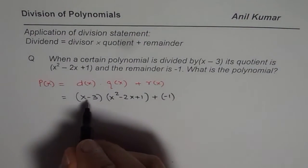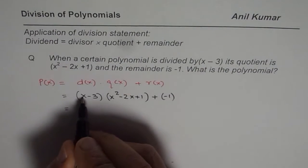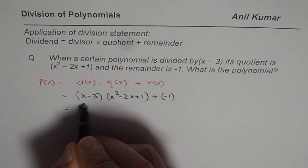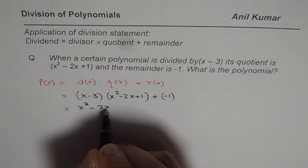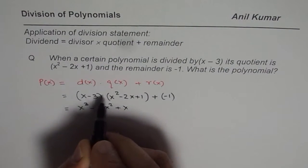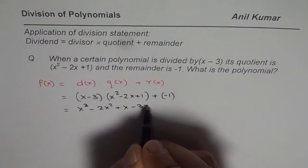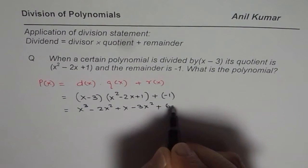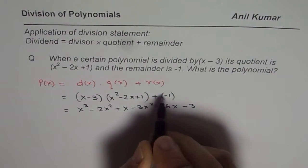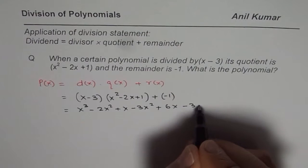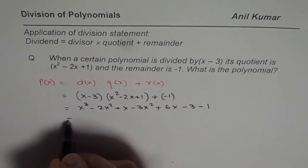Now perform the distributive property. When you multiply by x, you get x cubed minus 2x squared plus x, then multiply by minus 3, minus 3x squared plus 6x minus 3 and then add the remainder which is minus 1.